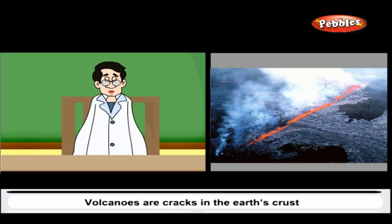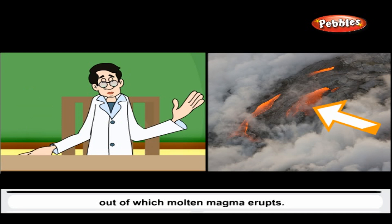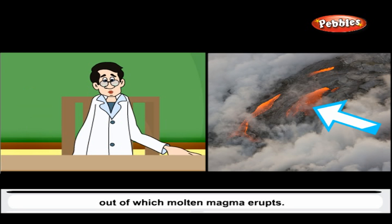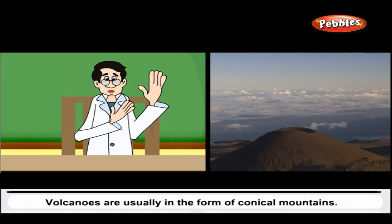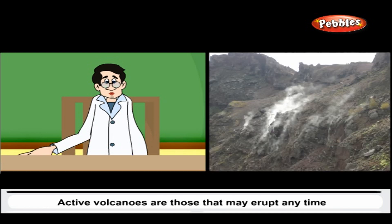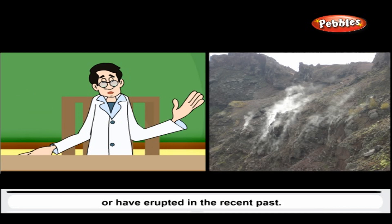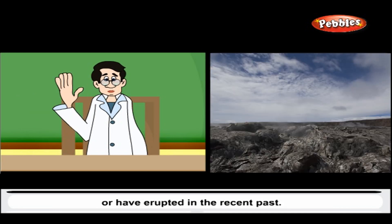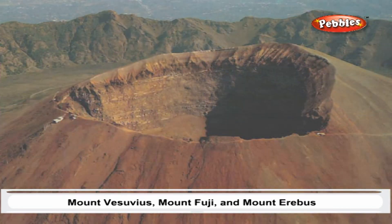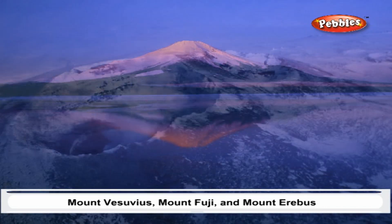Volcanoes are cracks in the earth's crust out of which molten magma erupts. Volcanoes are usually in the form of conical mountains. Active volcanoes are those that may erupt any time or have erupted in the recent past. Mount Vesuvius, Mount Fuji, and